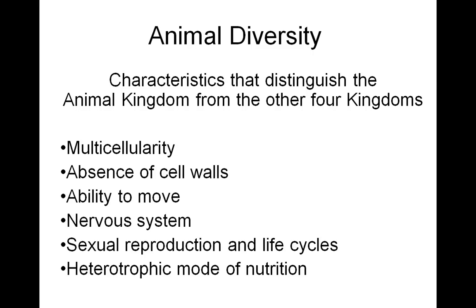Animals reproduce sexually and some have a pretty complicated life cycle that may involve incomplete or maybe even a complete metamorphosis. Animals cannot make their own food, so therefore they have a heterotrophic mode of nutrition.